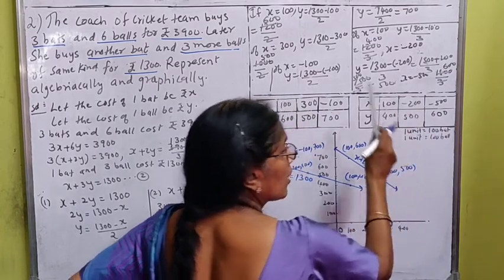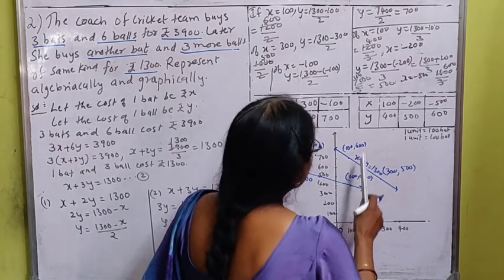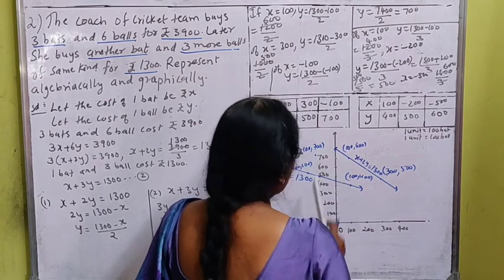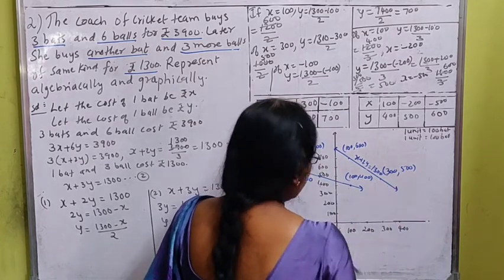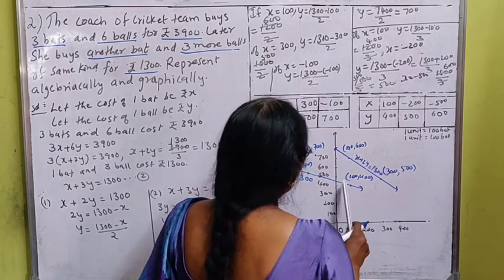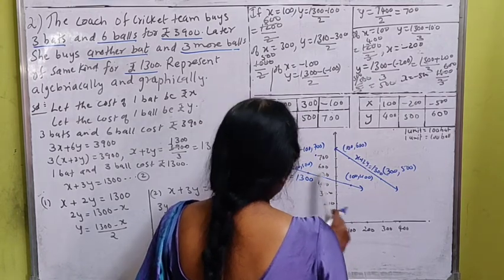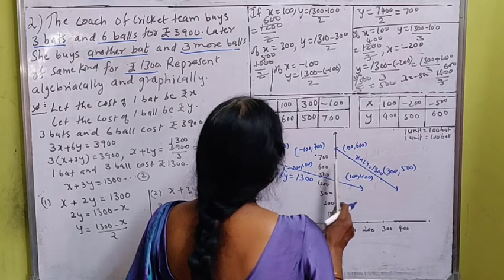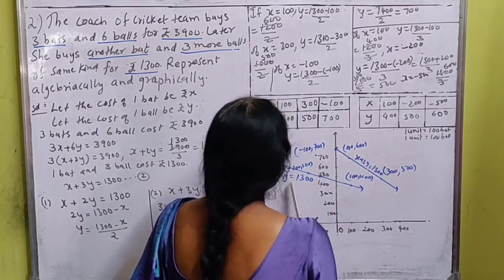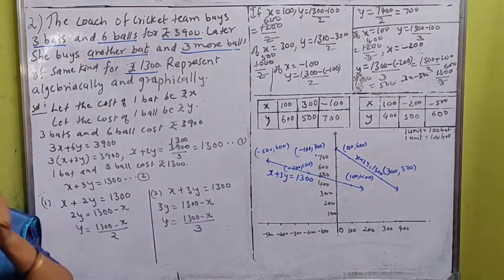So you get two straight lines on the same graph: x + 2y = 1,300 and x + 3y = 1,300. Mark all coordinate points clearly — x value first, then y value. Join the points to get each straight line.